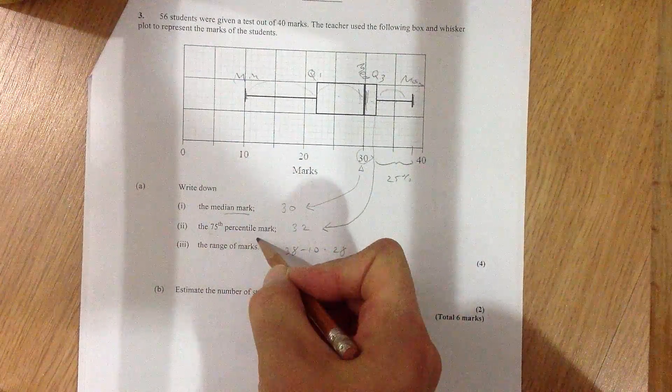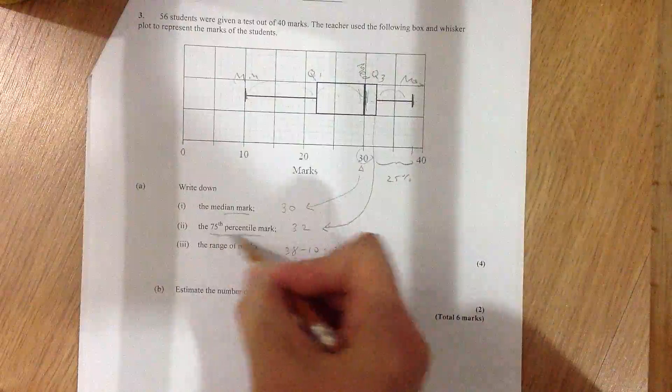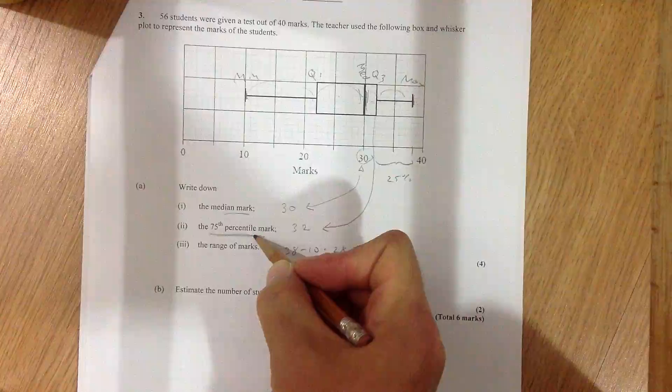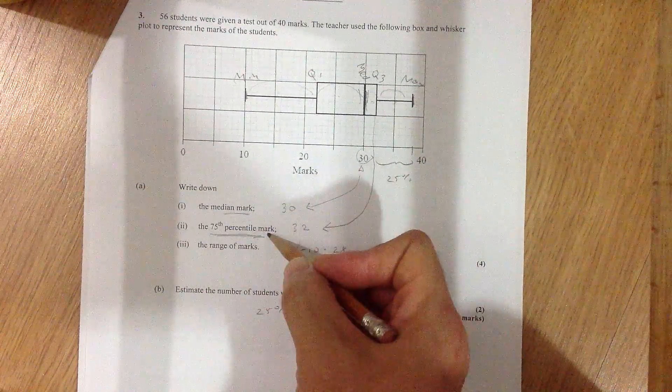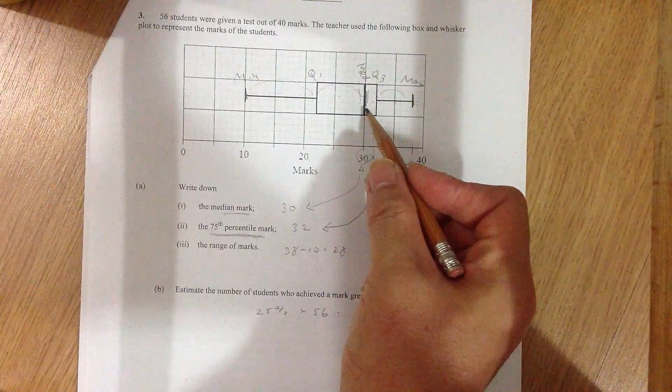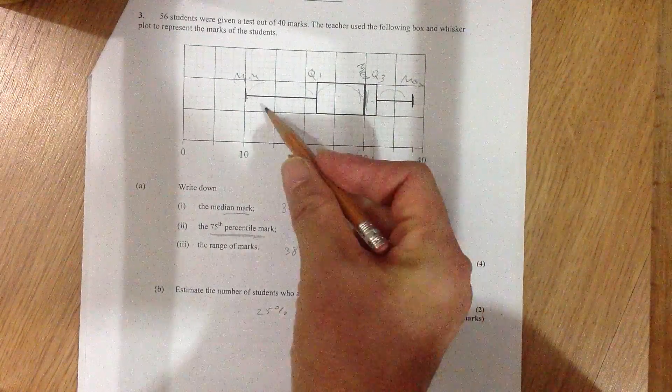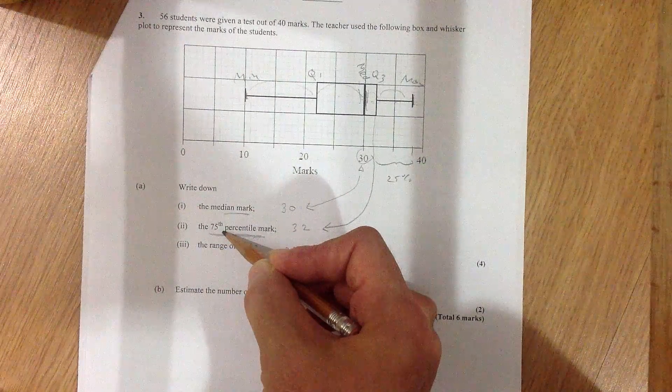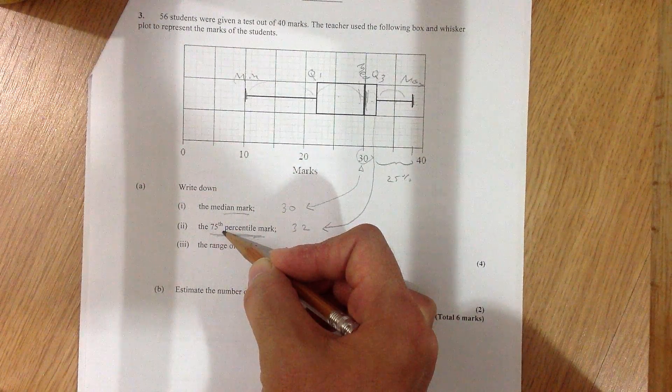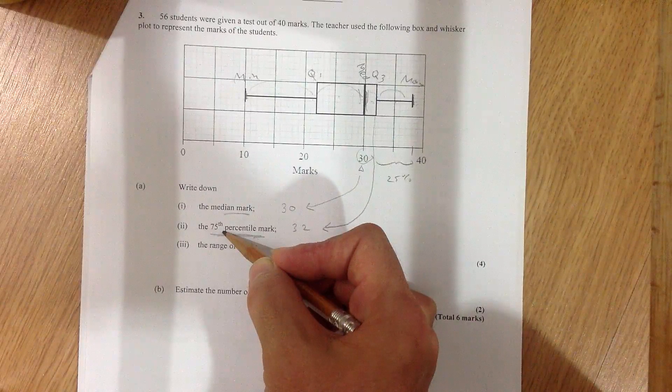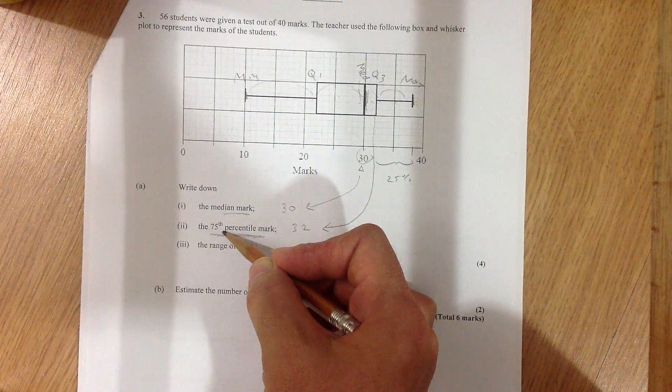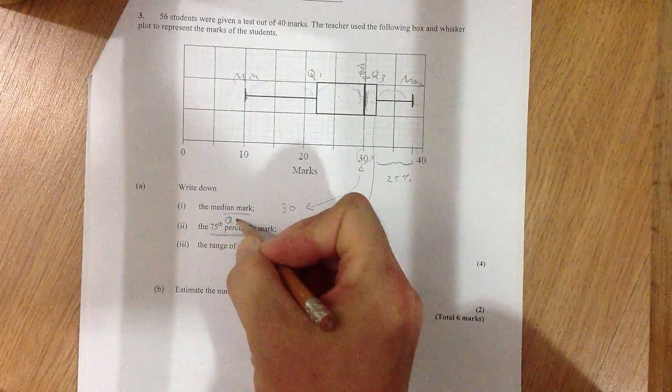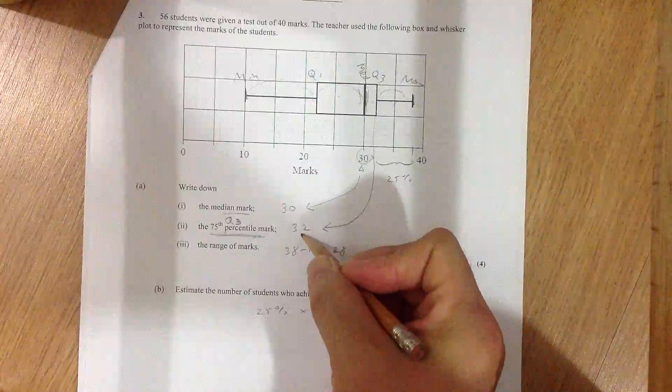The 75th percentile mark. Now we haven't done any problems with percentile. But percentile is the number when you mark a position on the box and whiskers, anything to the left of that would be included in the percentage of the percentile. So the 75th percentile mark would be the mark where 75% of the people are to the left of that mark. So it's basically the same thing as saying Q3. 75th percentile is the same thing as Q3.